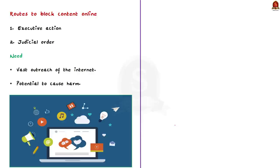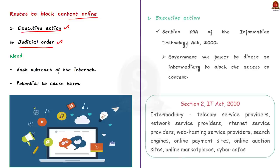There are two routes through which content can be blocked online. The first route is through executive action and the second route is through judicial order. First, let us see about the executive action. Governments across the world have the power to monitor and issue directions for regulation of content available online in their jurisdictions because there is vast outreach of the internet and it has large potential to cause significant harm.